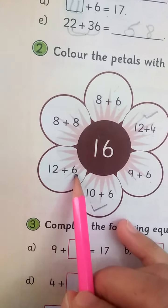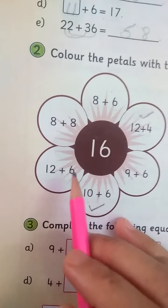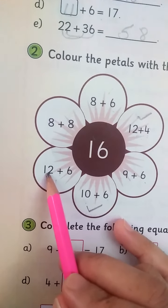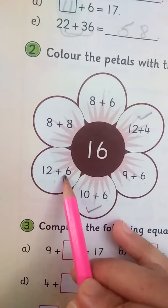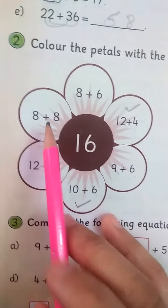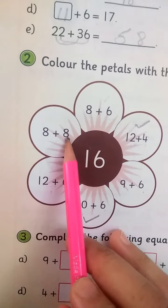12 plus 6 is equal to 18, not 16. Next one is 8 plus 8 is equal to 16.